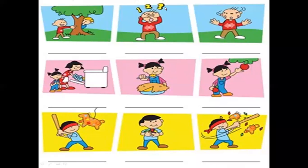Come to next, children. Which activity will come first? Yes, they are playing hide and seek — the two boys. So, first one, then second, then third. Come to next. Which one comes first? This one. Then preparing cake. Then enjoying the cake.